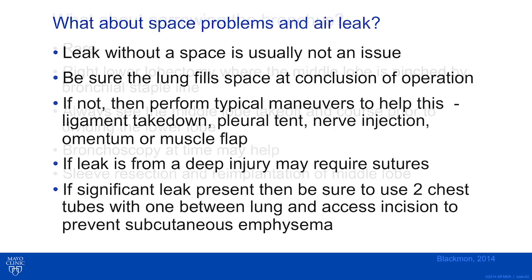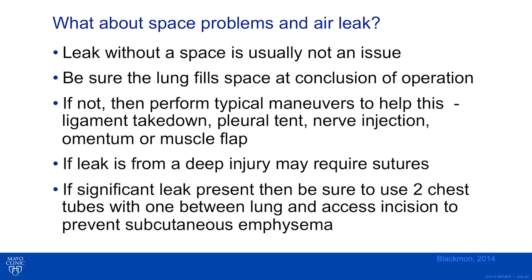What about space problems and air leak? A leak with a space problem is usually not an issue. Be sure your lung fills the space at the conclusion of the operation by watching it re-expand after placing the chest tube. If the lung does not re-expand, perform typical maneuvers: take down the ligament, perform a pleural tent, a nerve injection for temporary paralysis, or an omentum or muscle flap. If a leak is present from a deep injury, sutures may be required. If significant leak is present, use two chest tubes — one in between the lung and access incision — to prevent subcutaneous emphysema.